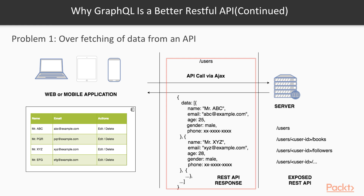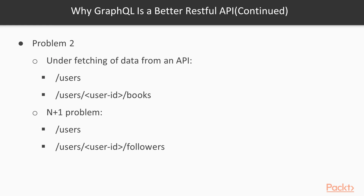There can be a case where a client gets more information than it actually requires. For example, a client consuming an API called slash user will receive a JSON response with an array of objects containing all information, which may not be needed by the client. This problem is generally referred to as over-fetching of data from an API. Another common problem is when a specific endpoint doesn't provide enough of the required information, and the client has to make additional requests to fetch everything it needs — for example, hitting slash user to get all users, then making an additional request for each user to fetch books written by them. This problem is generally referred to as under-fetching of data from an API.